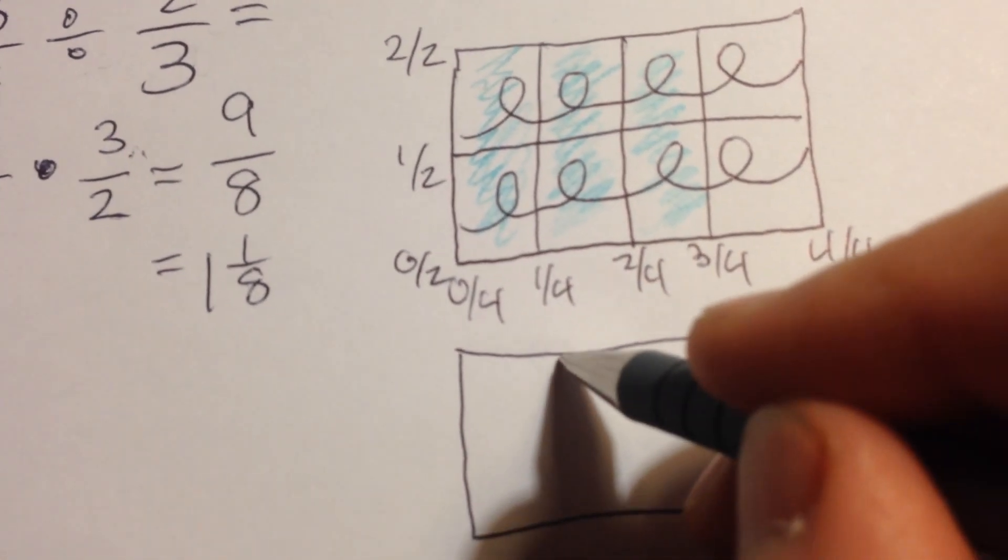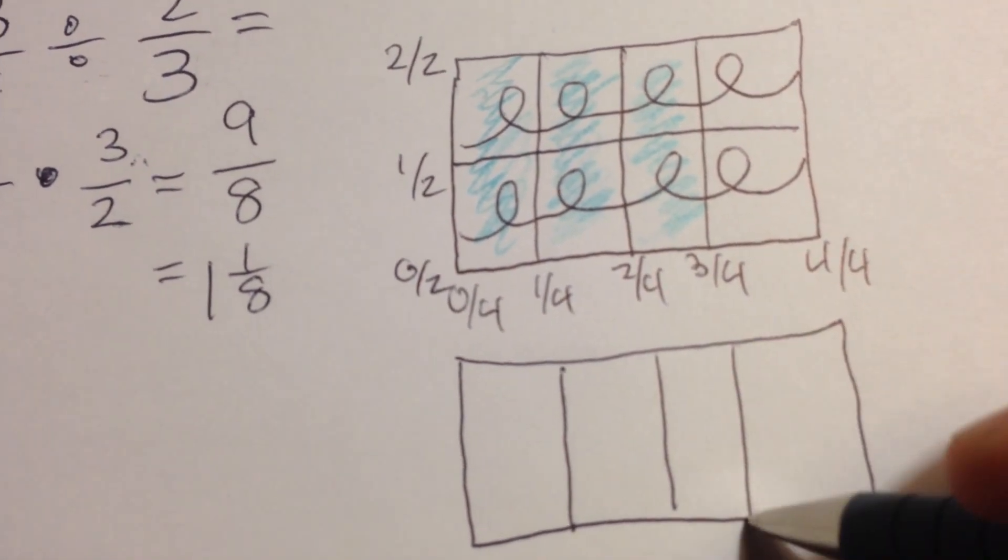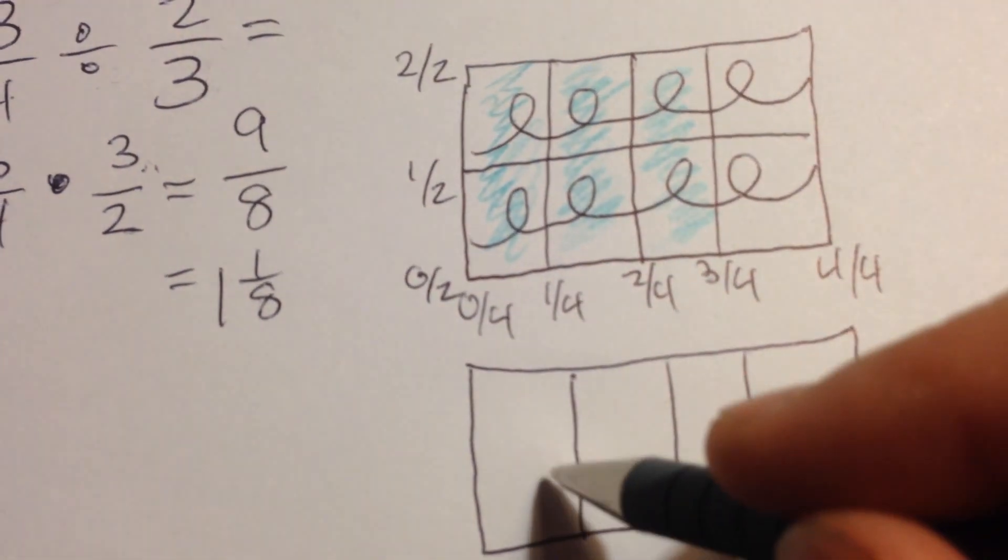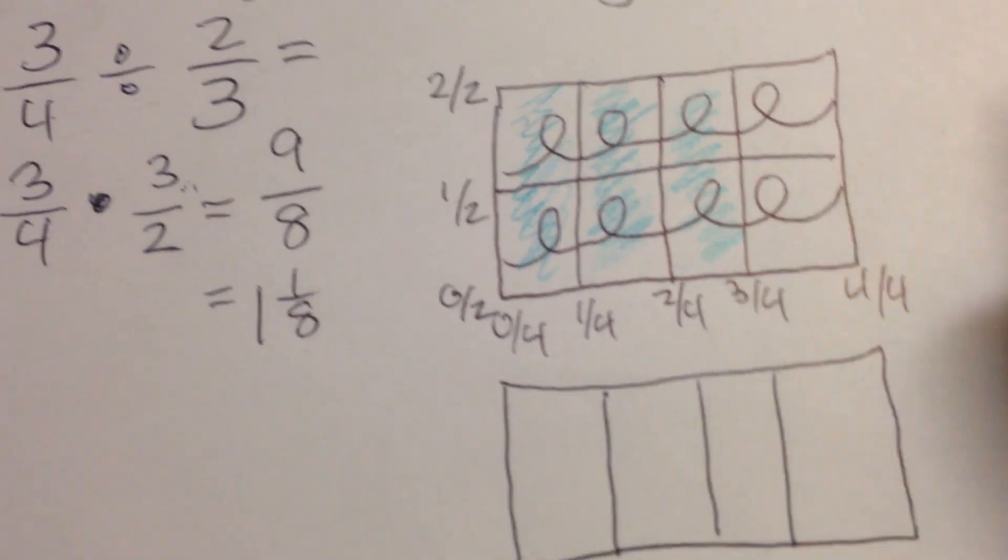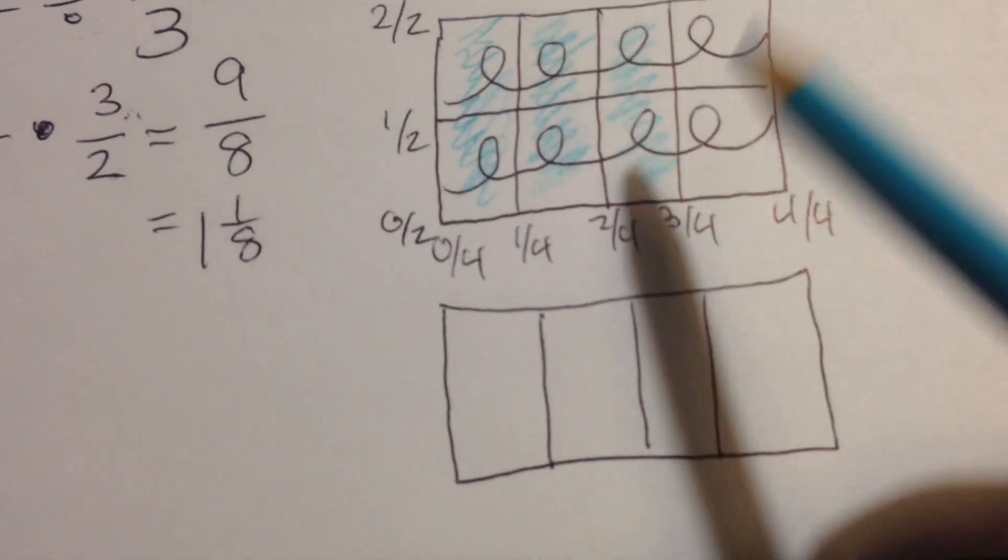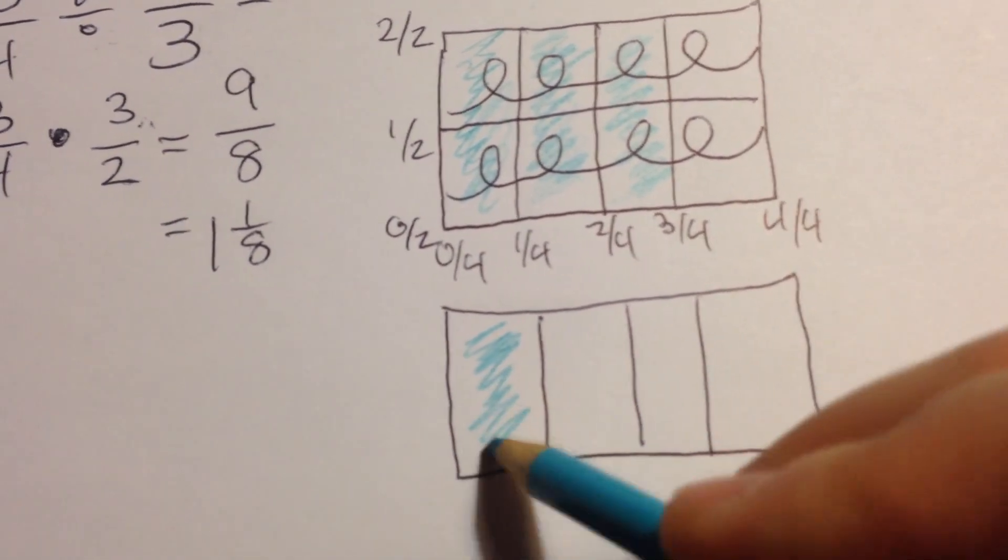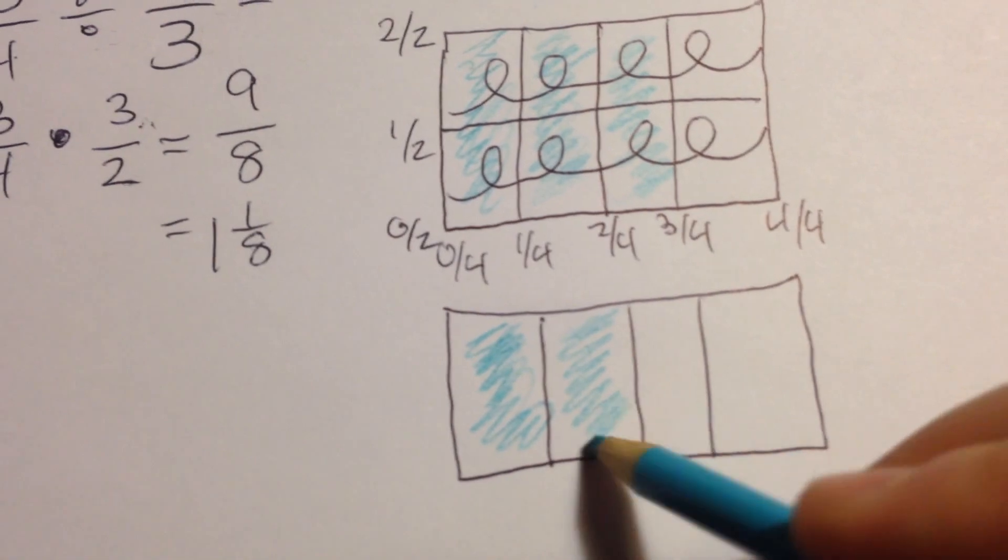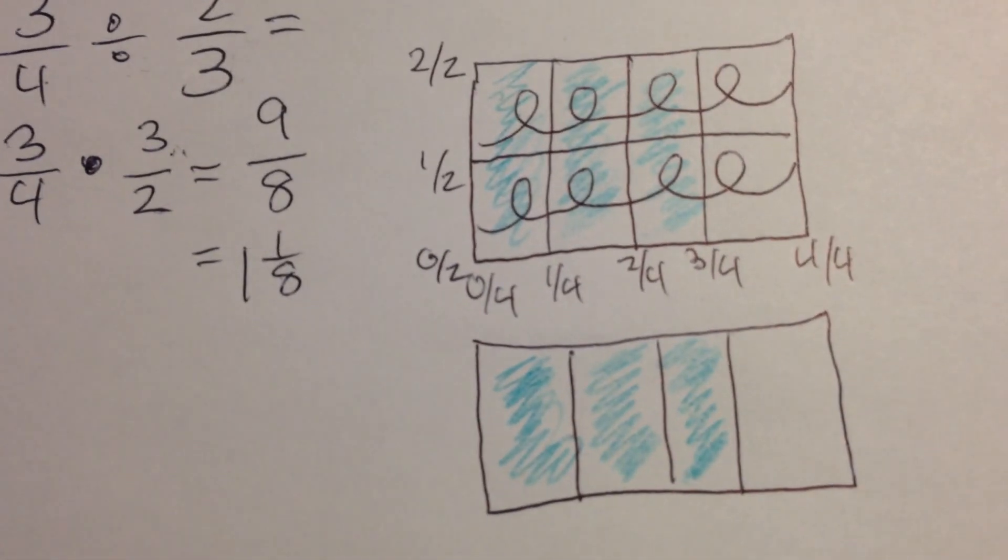I'll draw my fourths. I purposely drew it right below, so I could just use my same labels. Here's my fourth, my 1 fourth, my 2 fourths, my 3 fourths, and my 4 fourths. And I'll shade it in. Hopefully my video is not too wobbly. It's hard to film yourself and shade at the same time. There's my 3 fourths.